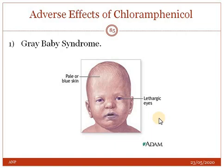Treatment for gray baby syndrome: first, discontinue the medication if it is being given to the baby. If the mother is being medicated with chloramphenicol, stop breastfeeding. The baby will need to be hospitalized, and treatment can include exchange transfusion and hemodialysis. In exchange transfusion, part of the baby's blood is removed and replaced with freshly donated blood or plasma via catheter. In hemodialysis, toxins are removed from the baby's bloodstream and a balance is achieved in potassium and sodium levels to stabilize blood pressure.